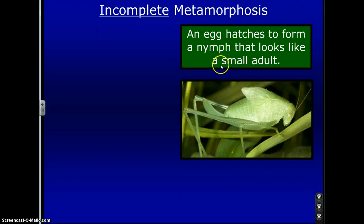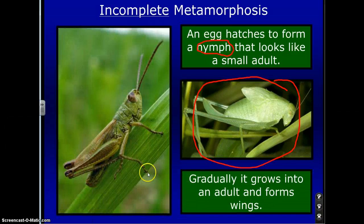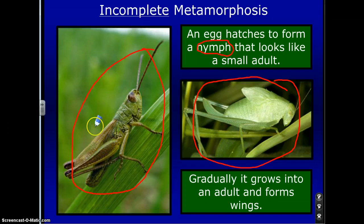There's a different type called incomplete metamorphosis, where an egg hatches to form a nymph that looks like a small adult. The key word here is nymph — the organism looks almost identical to what the adult of that insect would look like. It gradually grows into an adult and forms wings. This type of metamorphosis is comparable to what we go through as humans, because you have a small adult growing into a large adult, laying an egg, and going through the process all over again.